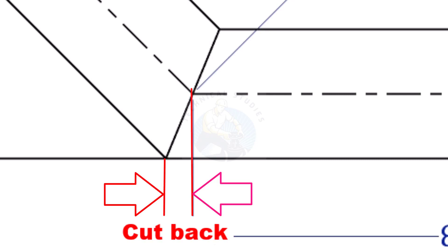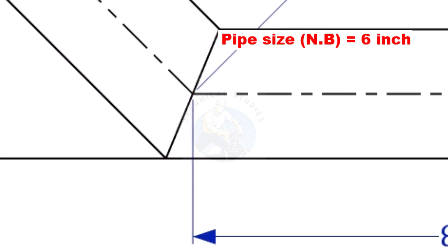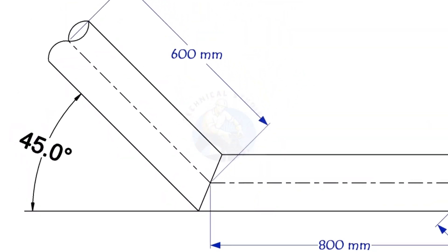To mark a miter cut, we need to know the cutback of the miter. In this offset, the nominal diameter of the pipe is 6 inch. The angle of the miter is 45 degree.